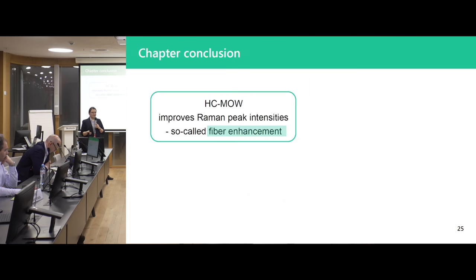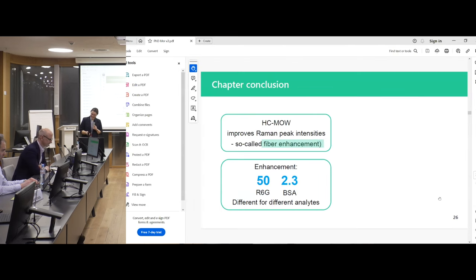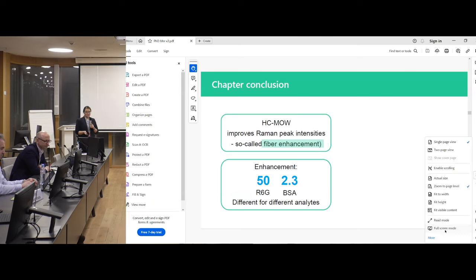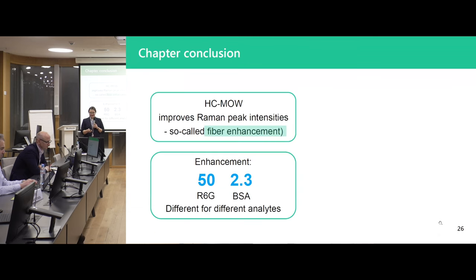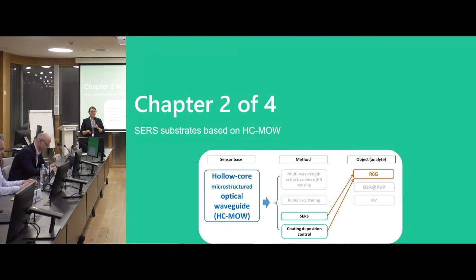In summary for this chapter: the hollow core waveguide does improve Raman peak intensities — so-called fiber enhancement. This enhancement is different for different analytes, but enhancement is still present. We therefore proceed to combining Raman sensing in the waveguide with other methods.